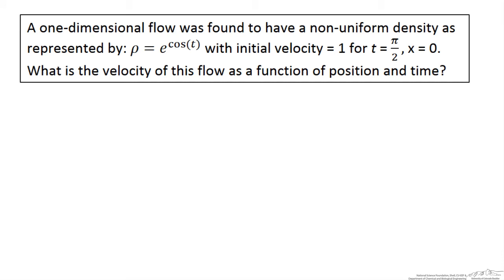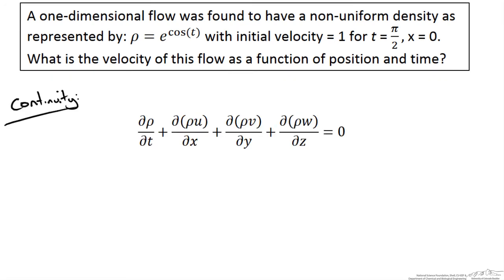Let's start by writing down our governing equation — the overall differential form of our continuity equation. Unfortunately we don't have steady state, and we know that the density is a function of position — it is non-uniform. So we can't simplify it to that easy form we saw before. Let's take this equation and break it down into individual terms using the chain rule.